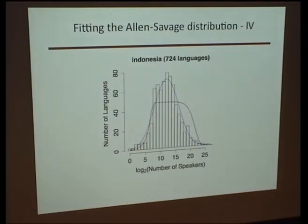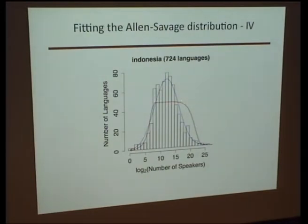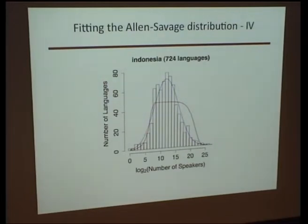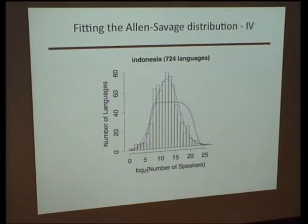If you try to fit data from Indonesia, you really have a bad result — the fit is really bad. There is a very strange plateau in the Allen-Savage distribution that clearly does not fit the data. I could also show you data for Malaysia and the Philippines, and you would see that the fit is also very bad. So the Allen-Savage distribution fits the data very well for Africa, and fits very badly for Asia.